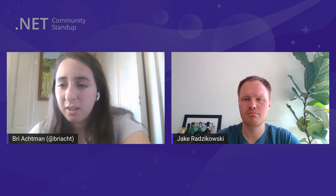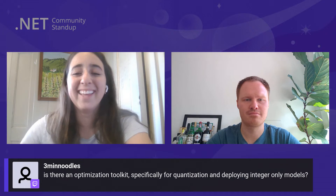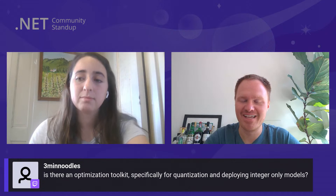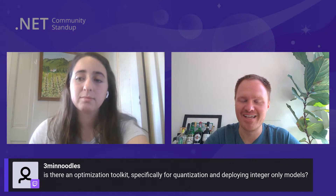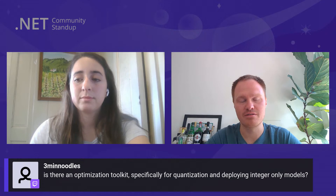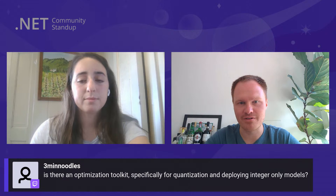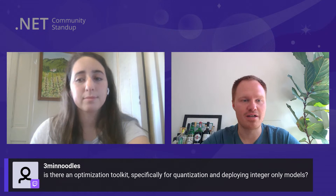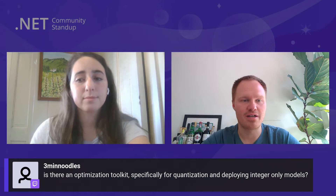There's a question: is there an optimization toolkit specifically for quantization — deploying integer-only models? I don't think we have anything like that. I'd redirect you to our repo — if you can point to existing tools and how you might want to use them, that would help. We're definitely noticing our user base is getting more advanced and asking for more advanced tools. We're excited to explore that area.